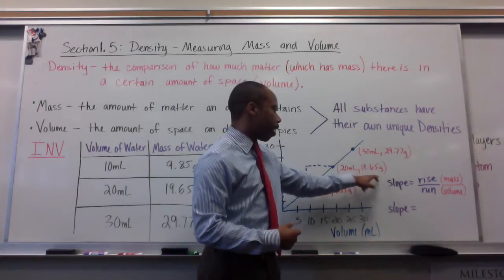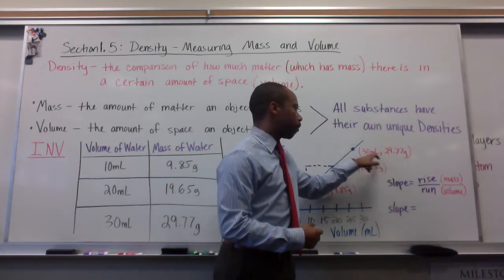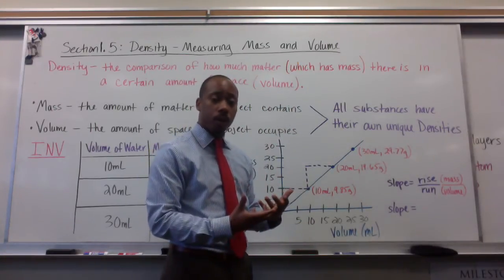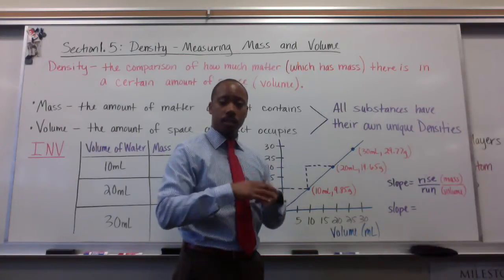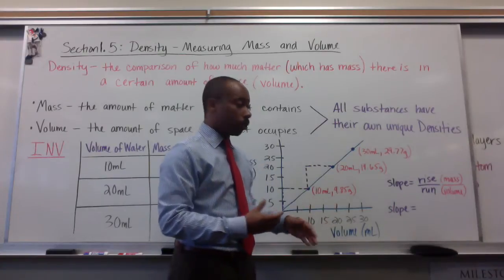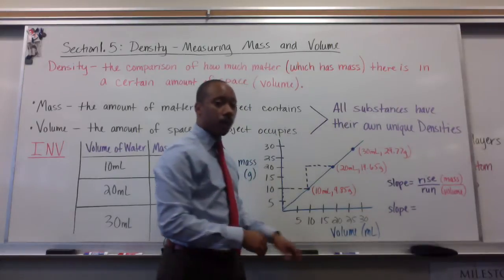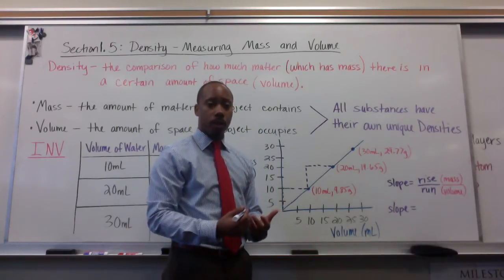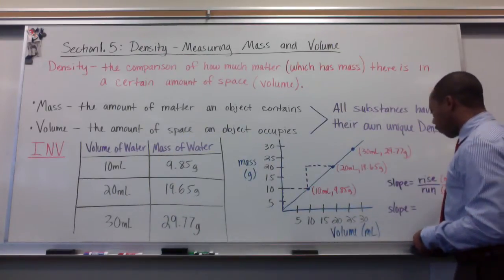19.65 grams divided by 20 milliliters. Or 29.77 grams divided by 30 milliliters. All of those will give me an approximate value of almost one, like 0.98 something grams per milliliter. So that would happen that you get the same value for all of those data points. Thus, they would all have the same or very similar values for the slope.